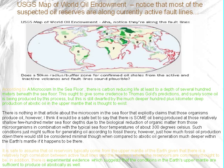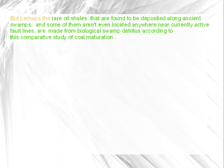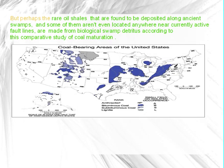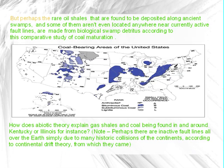It is safe to assume that oil reservoirs typically come from the upper mantle of the earth, given the relatively high correlation between active fault lines and the locations where reservoirs are commonly found. In addition, there is experimental evidence suggesting that conditions in the earth's upper mantle are sufficient to produce oil abiotically. But perhaps rare oil shales found deposited along ancient swamps, not located near currently active fault lines, may relate to inactive fault lines distributed across the earth due to many historic continental collisions according to continental drift theory.